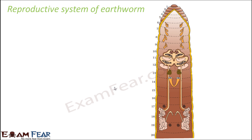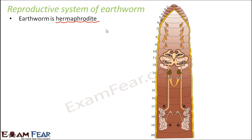Talking about the reproductive system of earthworms — how do earthworms reproduce, how do they give birth to new worms? The first thing we should know is that the earthworm is hermaphrodite. This is a familiar term; it means bisexual, meaning inside one earthworm you have both the male as well as the female sex organs.